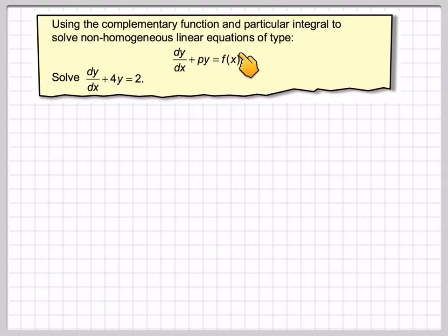Use the complementary function and particular integral to solve non-homogeneous linear equations of the type dy by dx plus py is equal to f of x. In the particular example, solve dy by dx plus 4y is equal to 2.